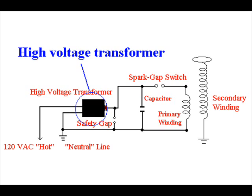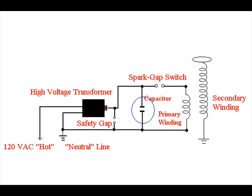We have a high voltage transformer, in this case a 6,000 volt furnace ignition transformer. We also have a high voltage capacitor, spark gap switch, primary winding, secondary winding, and a safety gap.